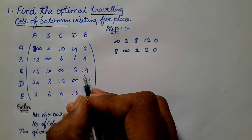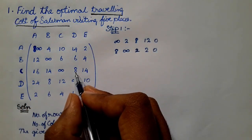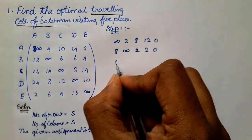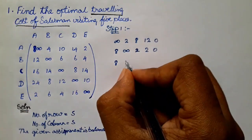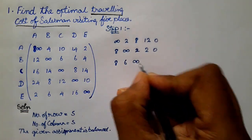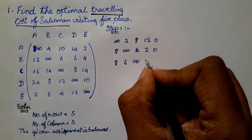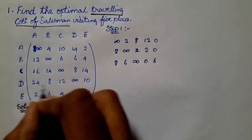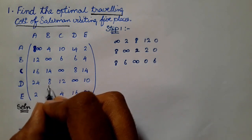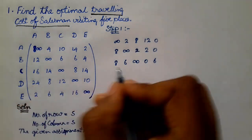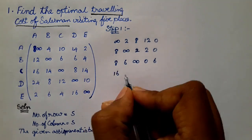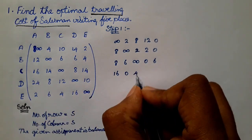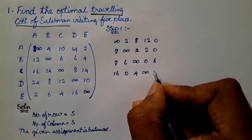For the third row, 8 is the least number: 16 minus 8 is 8, 14 minus 8 is 6, infinity stays, 8 minus 8 is 0, and 14 minus 8 is 6. For the fourth row, 8 is the least: 24 minus 8 is 16, 8 minus 8 is 0, 12 minus 8 is 4, infinity stays, and 10 minus 8 is 2.